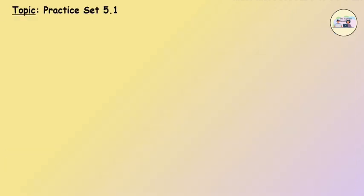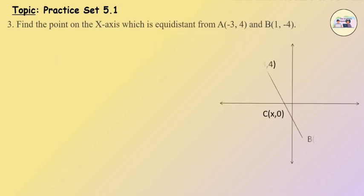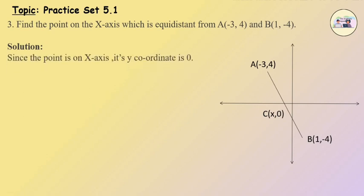Practice set 5.1, Question No. 3: Find the point on the x-axis which is equidistant from point A and B. Solution: Since the point is on the x-axis, its y-coordinate is 0. Let C(x, 0) be the point on the x-axis.